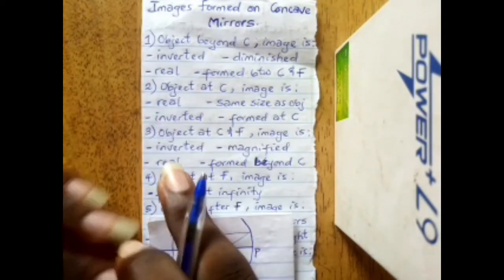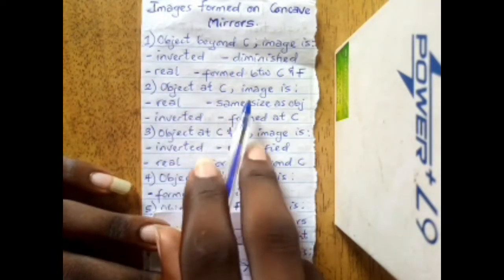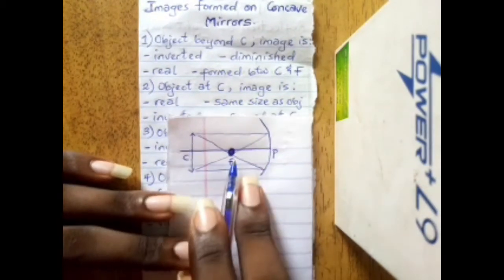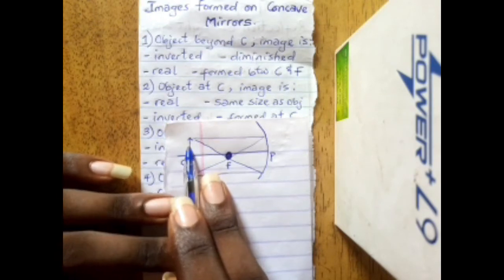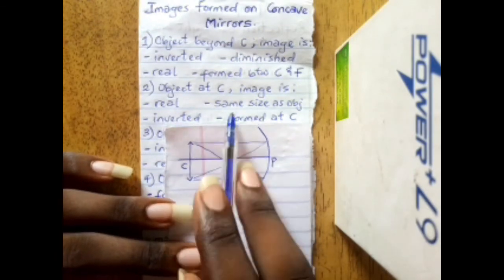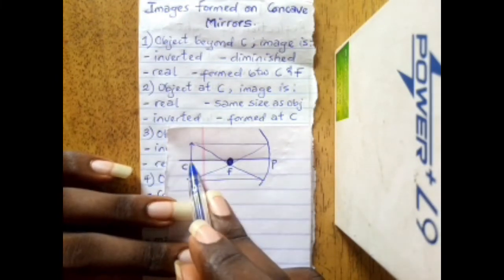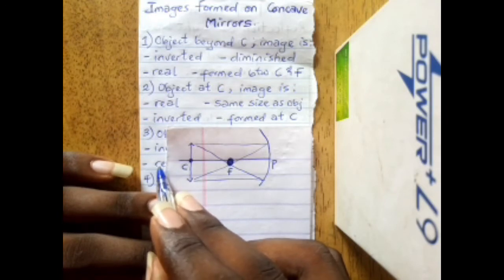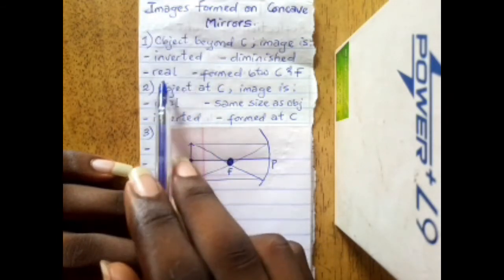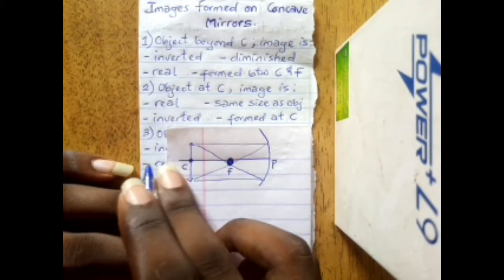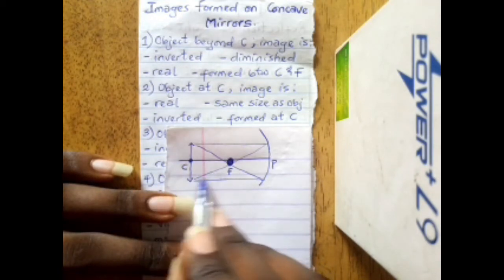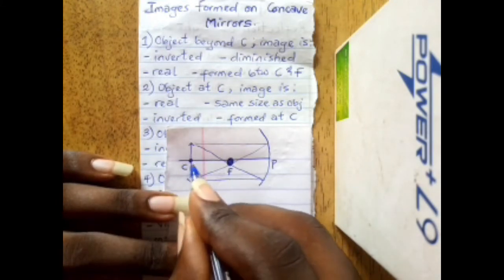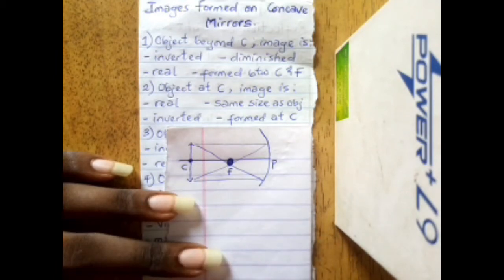The second instance: when the object is at C, the image formed is real, inverted, the same size as the object, and formed at C. When an object is placed at the center of curvature, the image is real, upside down, the same size as the object, and formed at that same point C.